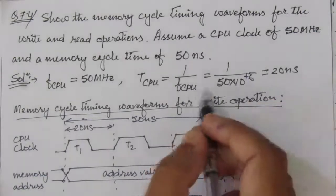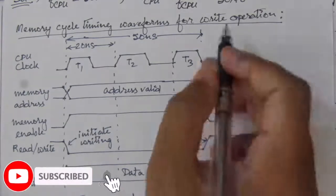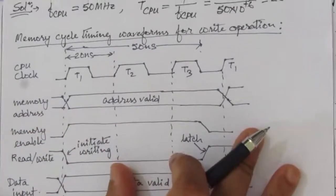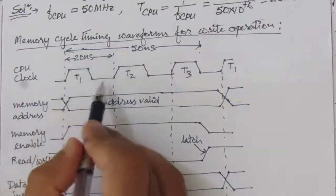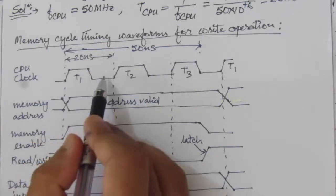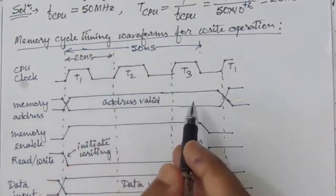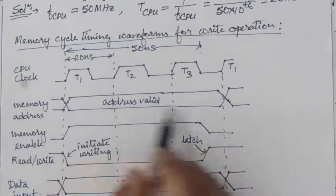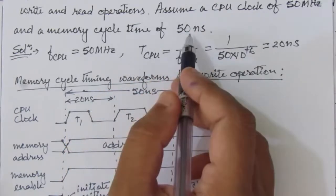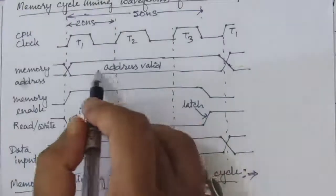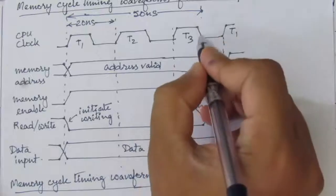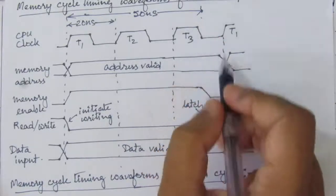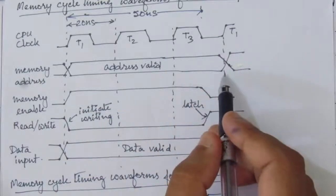First, let us draw the write operation timing diagram. We have the CPU clock with a time period of 20 nanoseconds per cycle. Next is the memory address line, which will be valid for three clock periods. Since the memory cycle time is 50 nanoseconds, we keep the address valid for 50 nanoseconds — 20 plus 20 equals 40, and up to the midpoint of the third cycle it reaches 50 nanoseconds. At the negative edge the address is no longer sensed, so the memory address is available for three clock cycles.